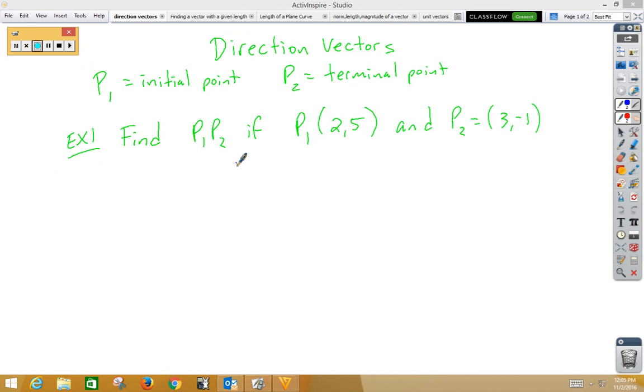In this video, we're doing direction vectors. Remember with the direction vector, we always have an initial point, p sub 1, and a terminal point, p sub 2. Order matters, so we always subtract the terminal point with the initial point.